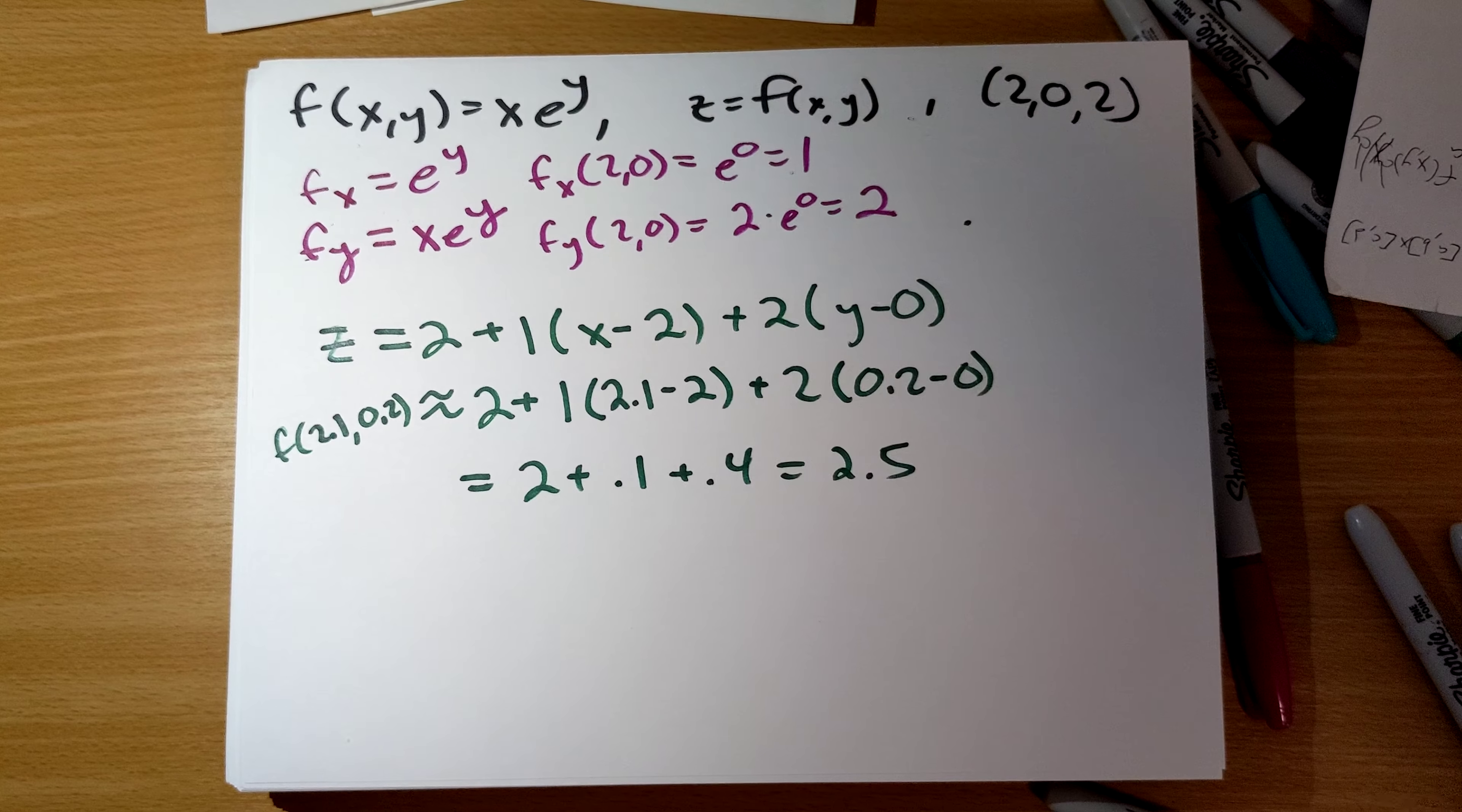So, equation of the tangent plane is going to be z equals the original z value 2 plus the f sub x at the point 1 times x minus 2 plus 2 times y minus 0. And so, this is our equation of the tangent plane.